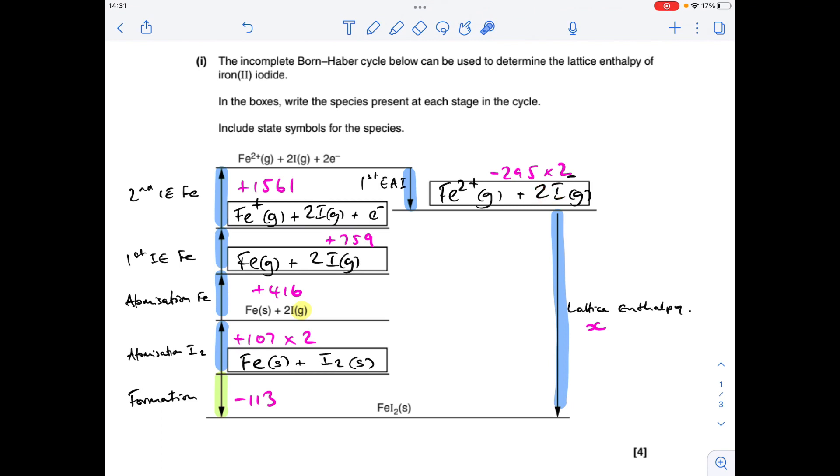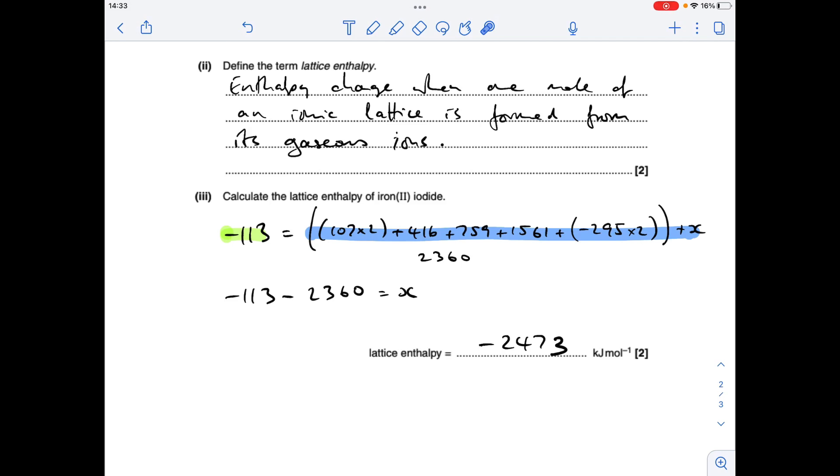So applying Hess's law to the cycle, if we start at the elements, finish at the solid ionic lattice, there's two ways to get there. You can go this very simple way, just the enthalpy change of formation, or you can go all the way around the outside of the cycle. So that's basically the sum of all the blue routes. And then all we need to do is solve for x. So we're putting the numbers in and rearranging for x, we get minus 2473 kilojoules per mole.